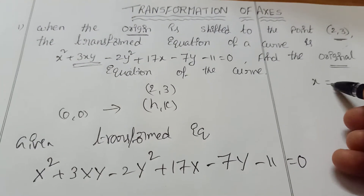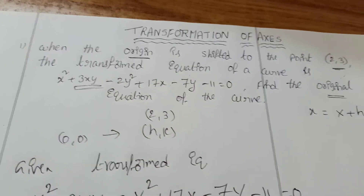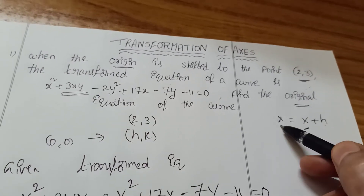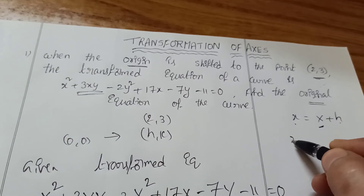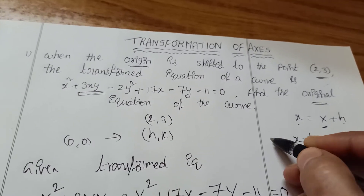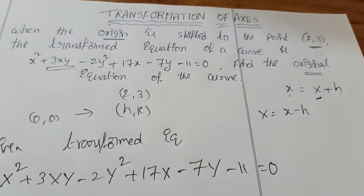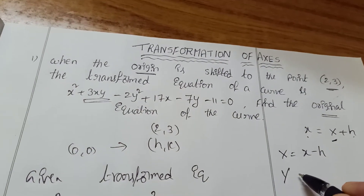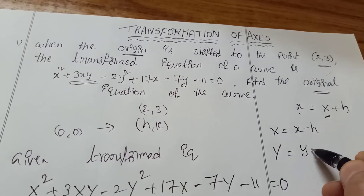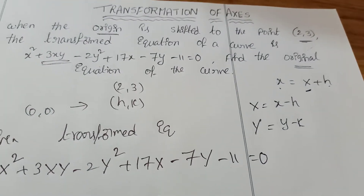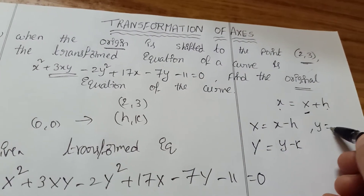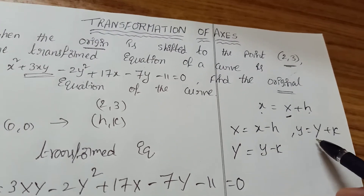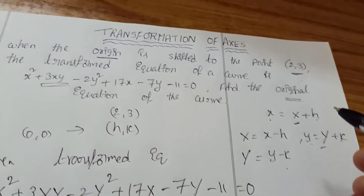Now, what is the formula for capital X? Small x equals capital X plus H, so if we want capital X, it becomes X minus H — so capital X equals X minus H. Similarly, capital Y equals small y minus K, because small y equals capital Y plus K, so capital Y equals y minus K.